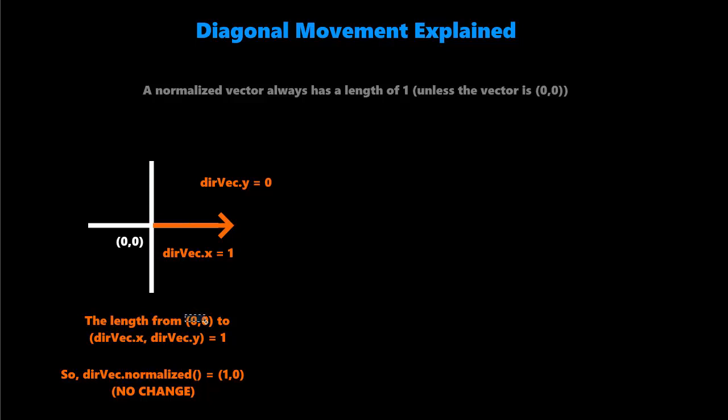So if we take the length from point 0, 0, which is where all the vectors start, to whatever the x and y coordinate of this direction vector is, we can see that the length is just 1. So when we normalize it, nothing changes. The length of the vector was already 1, so it stays the same.